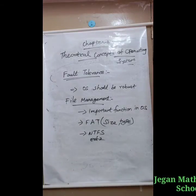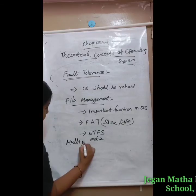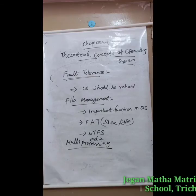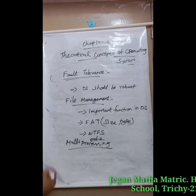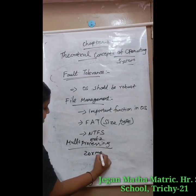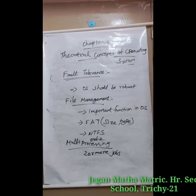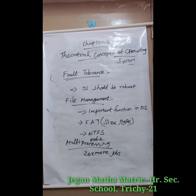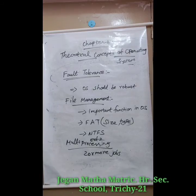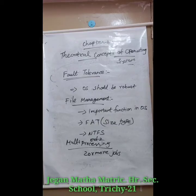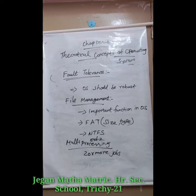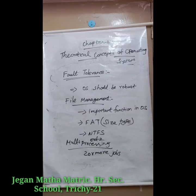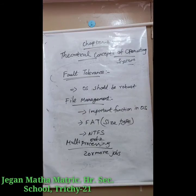The next one is multiprocessing, which is also one of the features of the operating system. It has two or more jobs for a single running process. The execution takes place in parallel, which is called parallel processing. This feature is used for high-speed execution, which increases the power of computing.